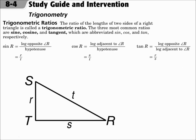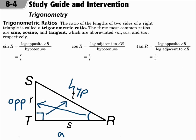In this triangle, I have right angle T, and I'm taking my trigonometric ratios with respect to angle R. I need to identify the opposite leg, the adjacent leg, and the hypotenuse. The opposite leg is the side that's opposite angle R — if I draw across the triangle, that side is the opposite side. If I draw across from the right angle, that side is the hypotenuse. And the leg that's next to angle R is the adjacent leg. Always start by identifying the side lengths of the triangle as opposite, adjacent, and hypotenuse.